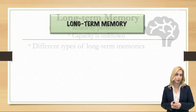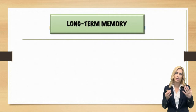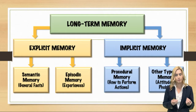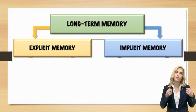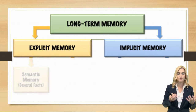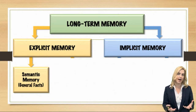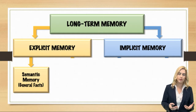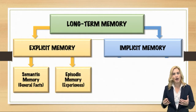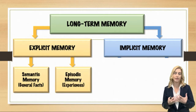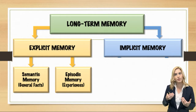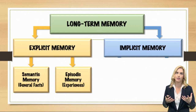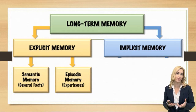There are different types of long-term memories. You can see there are two categories and four subcategories: explicit memory and implicit memory. With explicit memory we have semantic memory, which is general facts — two plus two is four, the father of psychology is Wilhelm Wundt. Your episodic memory I think of as episodes or experiences in your life, so remembering your high school graduation or the first day your parents brought home your baby brother or sister.